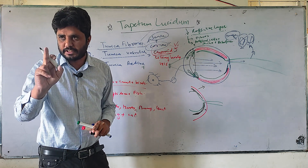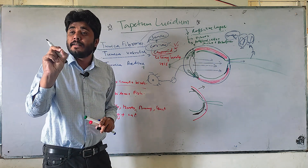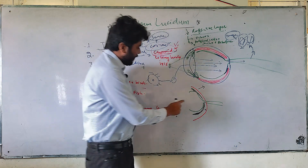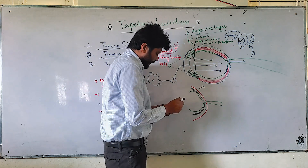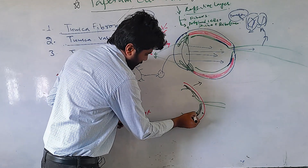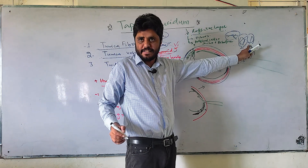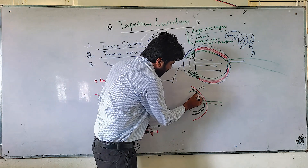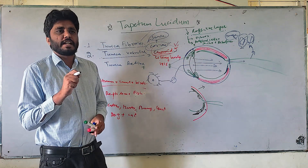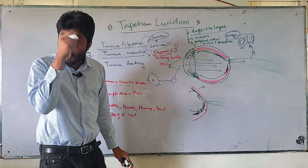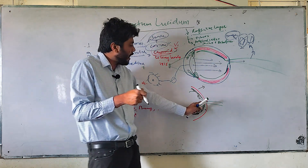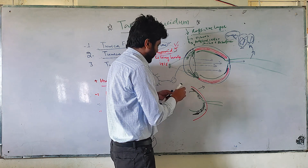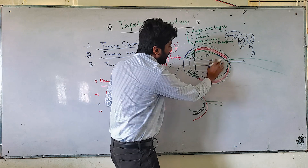Why is it called a reflective layer? This is the functional importance of the structure. The photons coming from light, when they pass through the retina, this layer bounces them back. Normally photons go forward to the optic nerve and brain, but if there is a tapetum lucidum, it reflects those photons back to the retina. This gives the photoreceptors one more chance to absorb the photon.